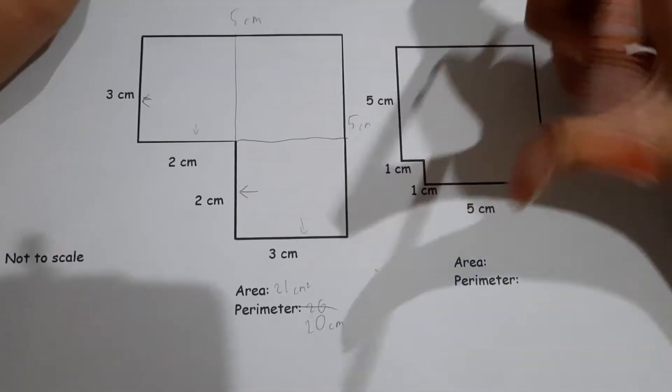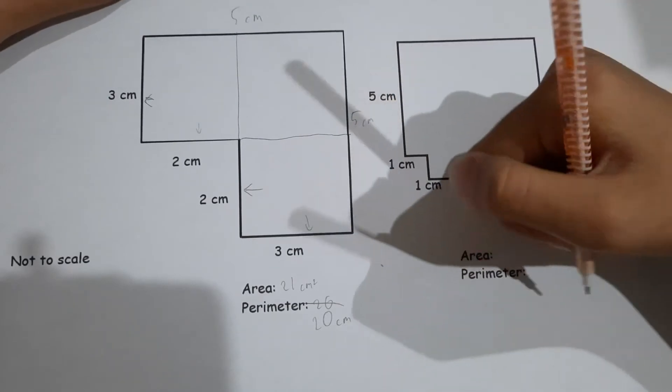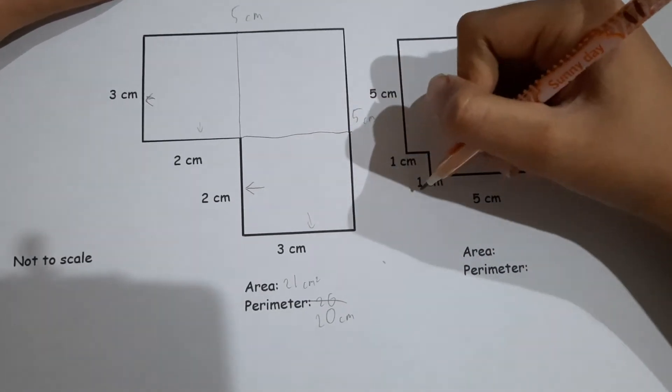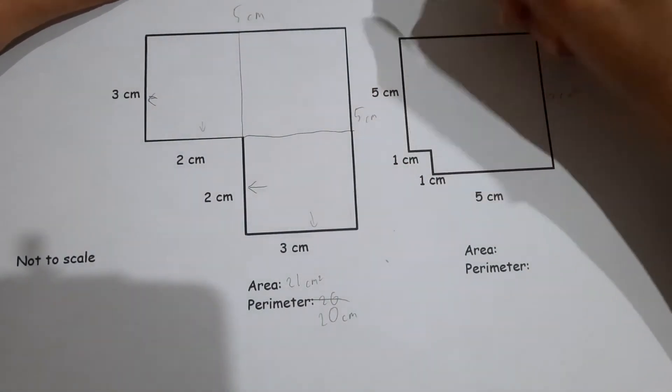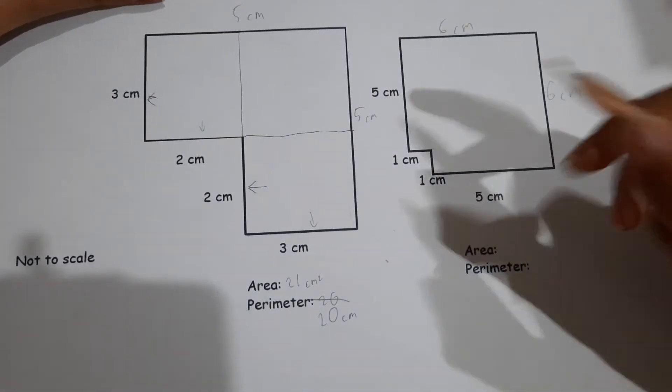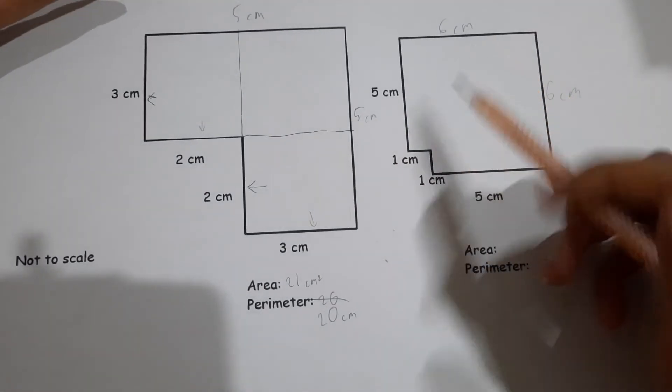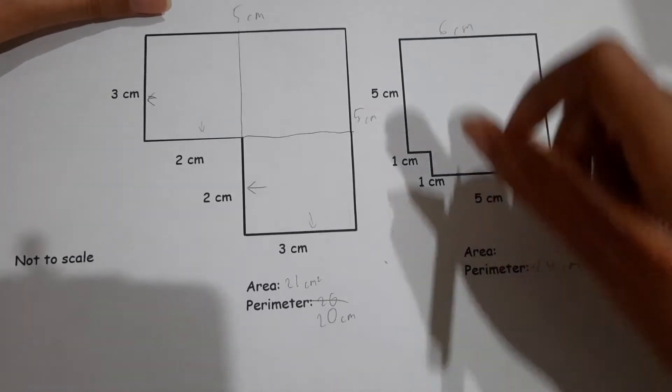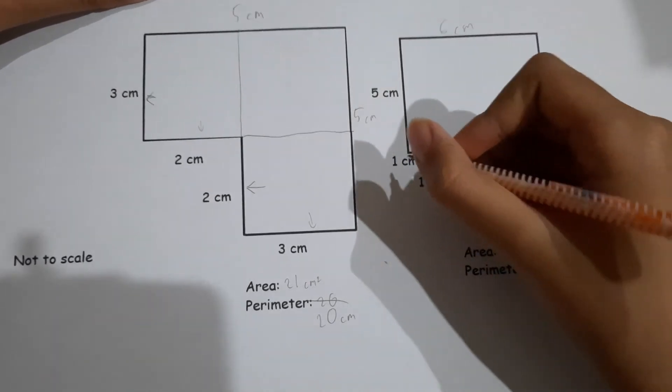How about this one? Five centimeters, two... so how about the perimeter? Five plus one equals to six, six, and then the exact same. So five, six, twelve, twenty-four, twenty-four centimeters. How about the area?